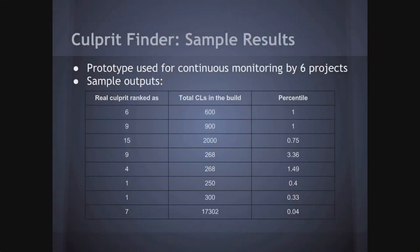This prototype is now being integrated into a proper production continuous build system, which is a bit slower but getting there. Once it's in place, people won't need to go through others' code, mail them, and ask why they did something. The results are significant — we often analyze cases involving hundreds of thousands of changes. In one example, there were 17,000 CLs between the green and red build, and the tool ranked the actual culprit as number seven. You don't have to worry about filtering out hundreds of CLs.